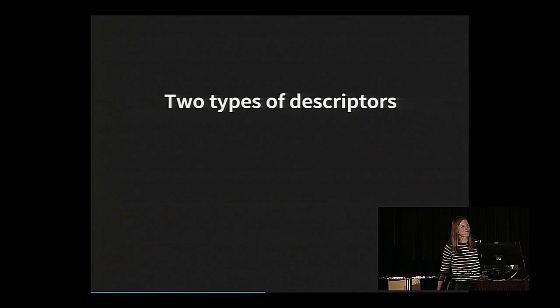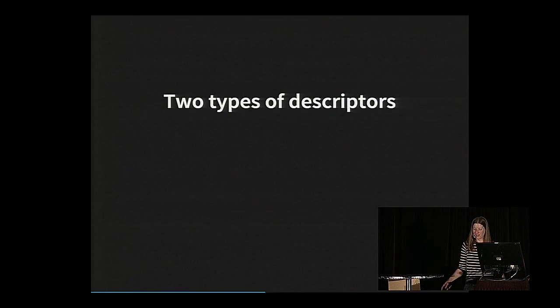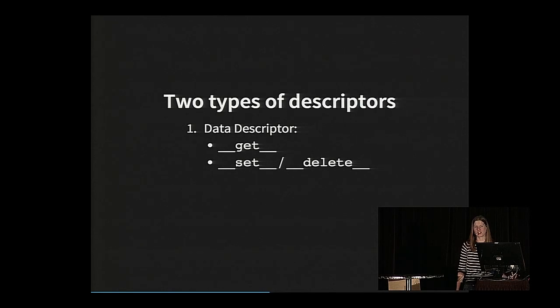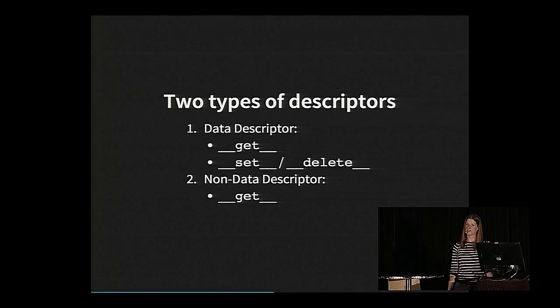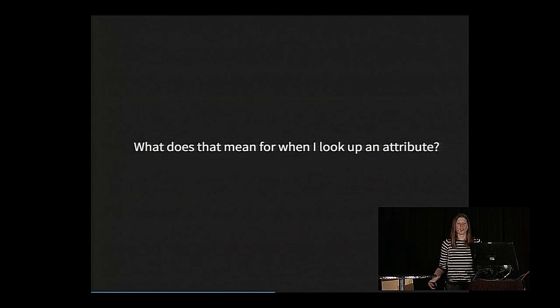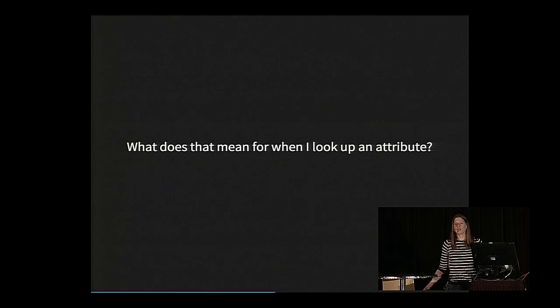So now I didn't explain everything, though. There's two types of descriptors. There's a data descriptor, where you define a get, and then you define a set and or delete. And then there's a non-data descriptor, where you just define a get function. So like, why do I have these?